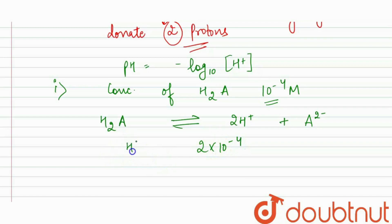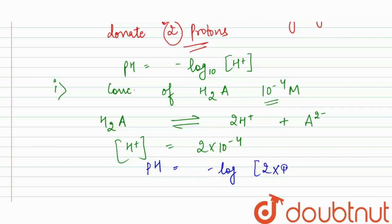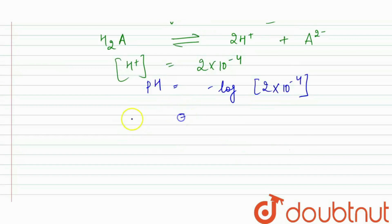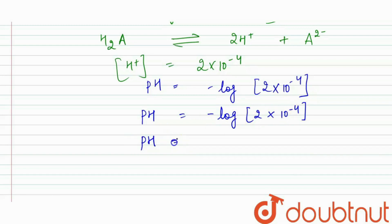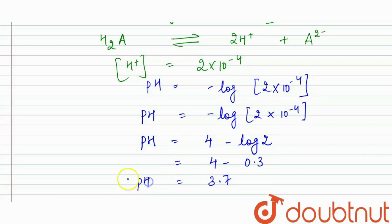The concentration of H⁺ ions is 2 × 10⁻⁴. So, pH = −log(2 × 10⁻⁴) = 4 − log 2. Since log 2 = 0.3, pH = 3.7. In the first case, the pH value is equal to 3.7.